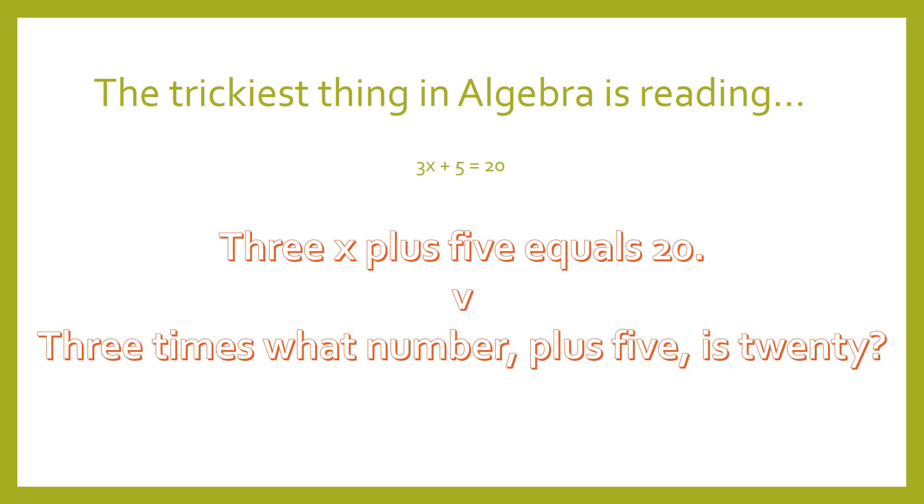Now, the trickiest thing in algebra, regardless of the level, is reading it. Reading the algebra is really what unlocks it and makes it accessible or just something you have to do with all these different confusing things to remember. You see this equation right here, 3 times x plus 5 equals 20. Typically, people that struggle, they don't even read it. They just look at it and think, what do I do? And that's really a shame because the first thing you should do is you should read it.